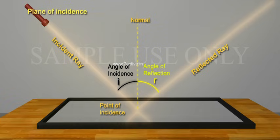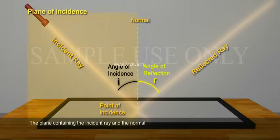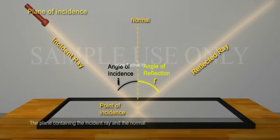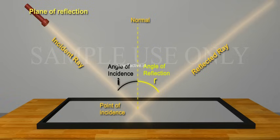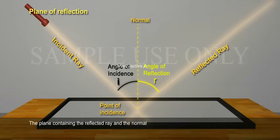Plane of incidence: The plane containing the incident ray and the normal. Plane of reflection: The plane containing the reflected ray and the normal.